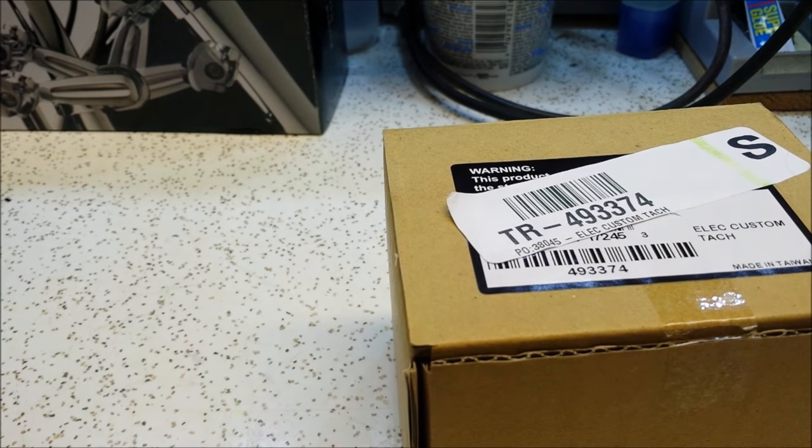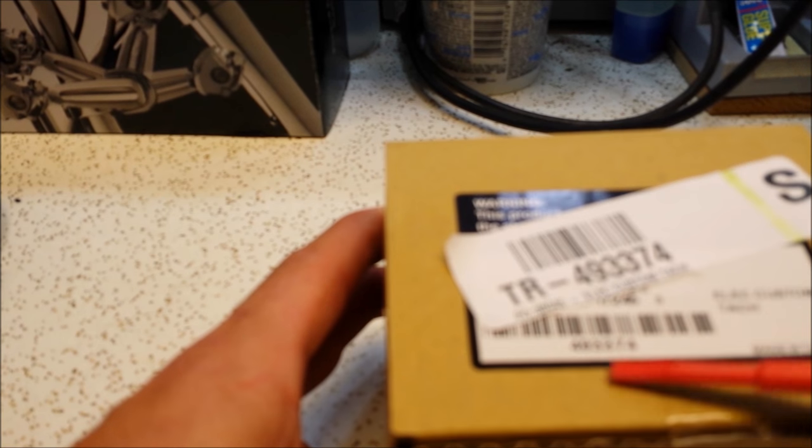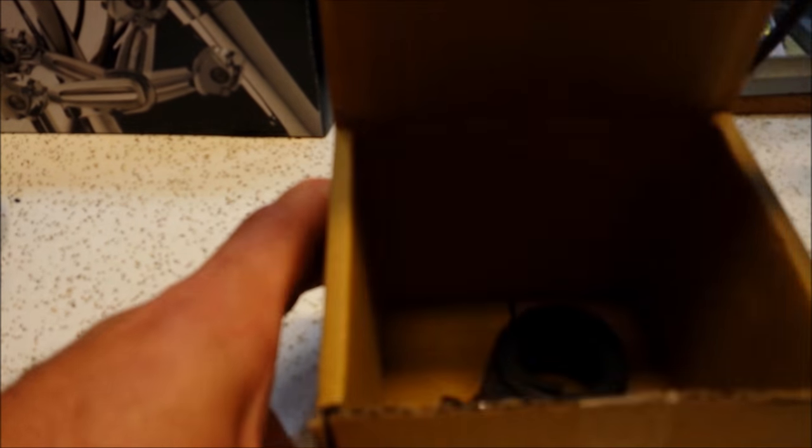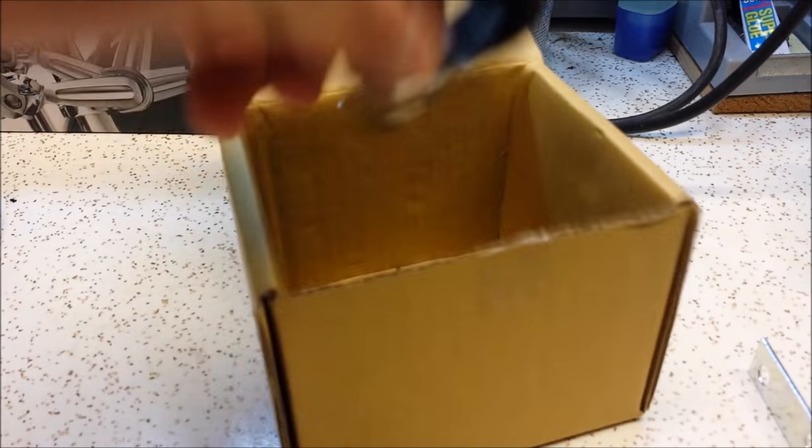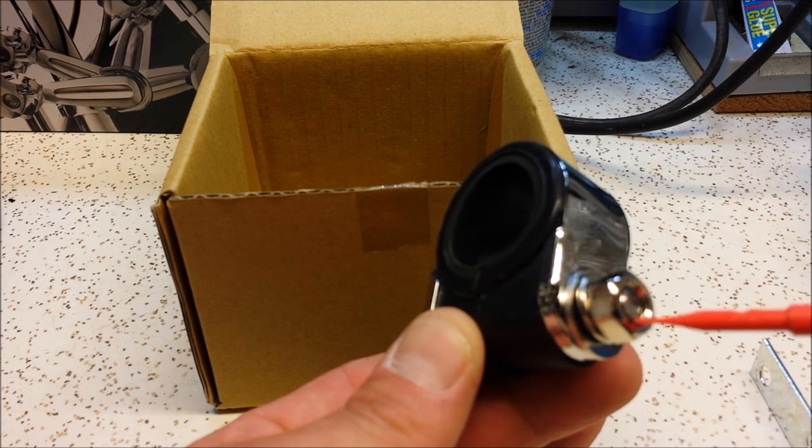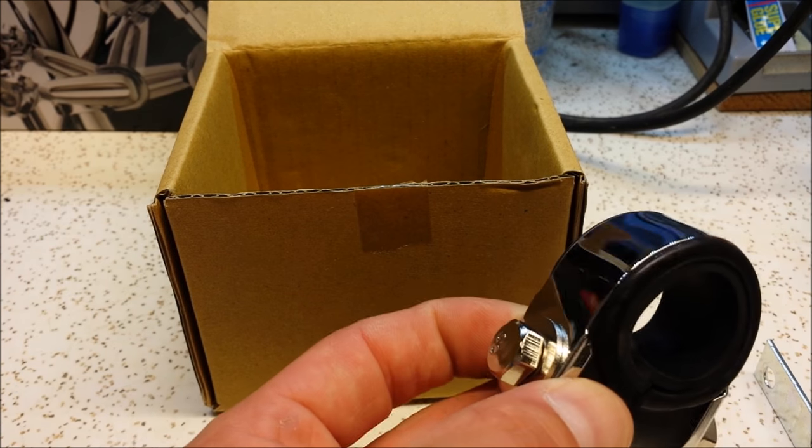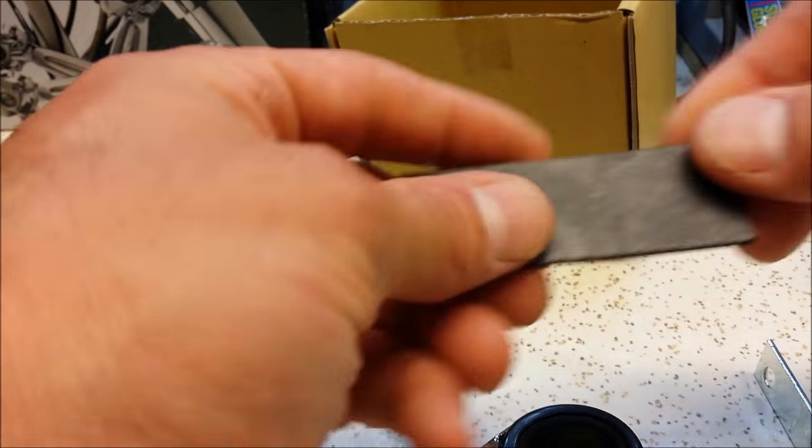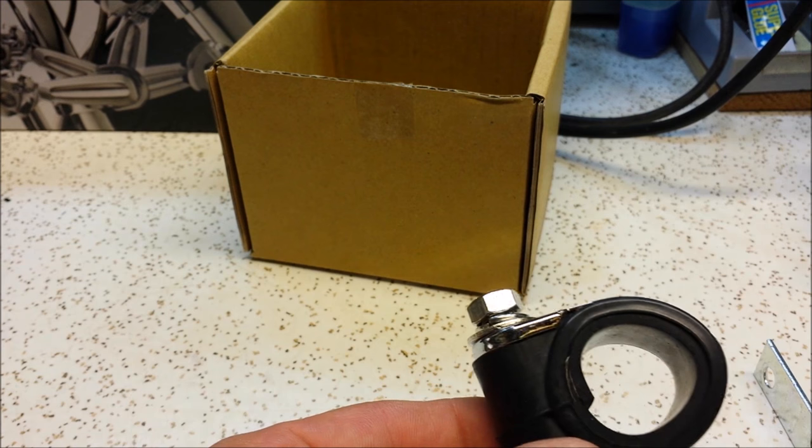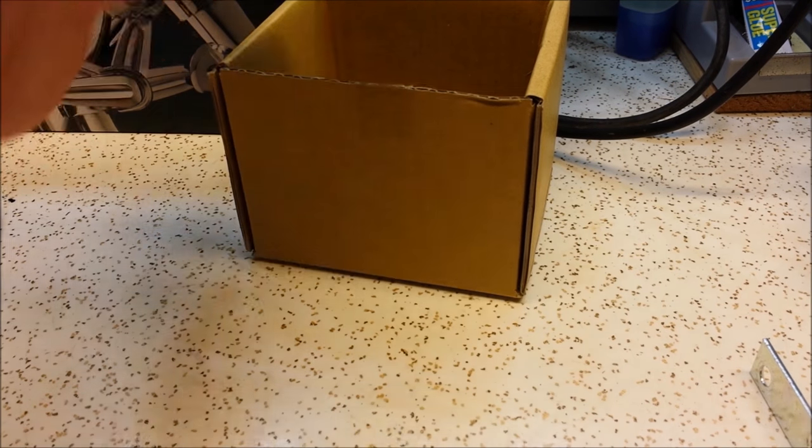When you get the tachometer, it comes in a box like this. I'll put a link in the description. The part number is 493374. In the box you get the tachometer, a clamp for generic handlebar mount with a half inch nut and rubber to fit different size handlebars. It also comes with another piece of rubber if you need more. However, on my handlebars I didn't particularly care for the way it looked, so I didn't use that.